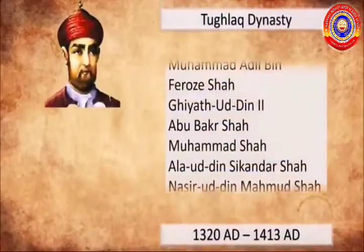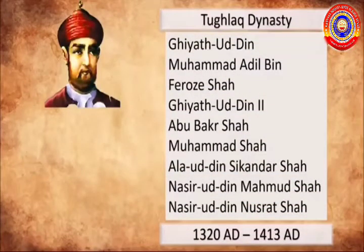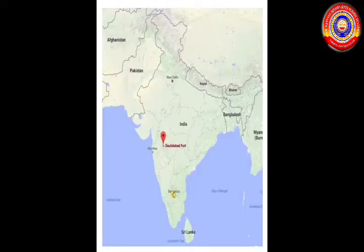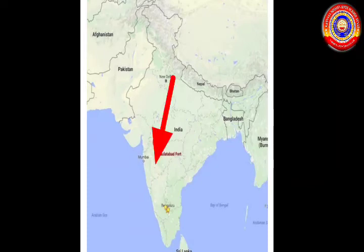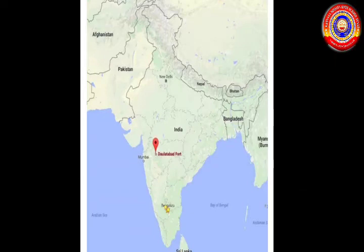The Khalji dynasty was succeeded by the Tughlaq dynasty. Muhammad bin Tughlaq was the important ruler of the Tughlaq dynasty. To rule more efficiently, he shifted the capital from Delhi to Devagiri and renamed it as Daulatabad. He thought that all regions could be controlled more effectively this way, but later found it was not practical, so he withdrew the decision.